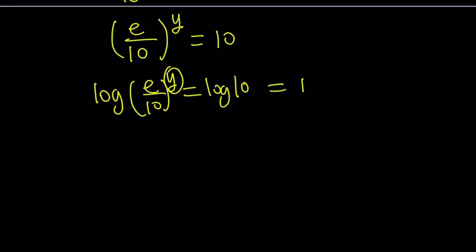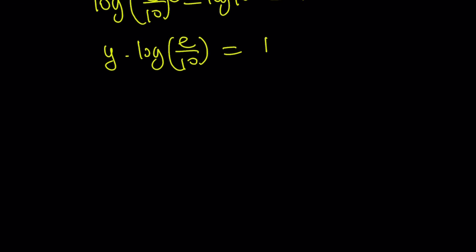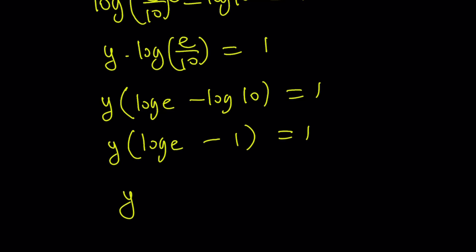Now you can bring the y down: y times log of e over 10 equals 1. Since we're solving for y, we can divide both sides by that quantity. Let's simplify first using the property of expanding the log of a quotient: we write it as log e minus log 10, and since log 10 is 1, we get y times log e minus 1 equals 1.